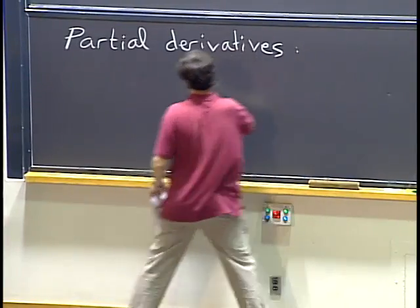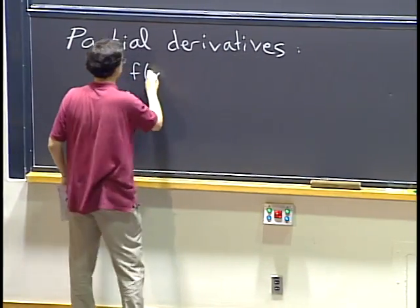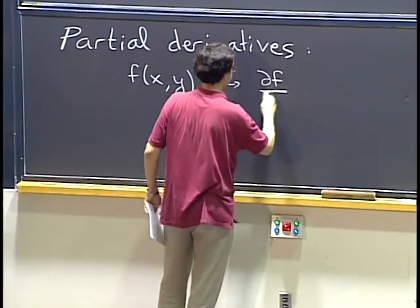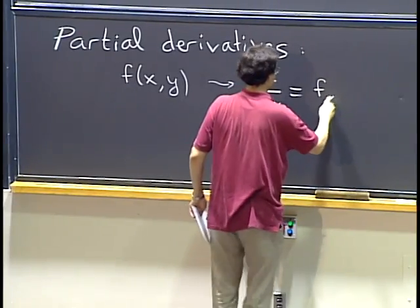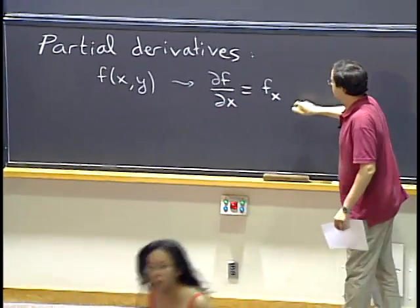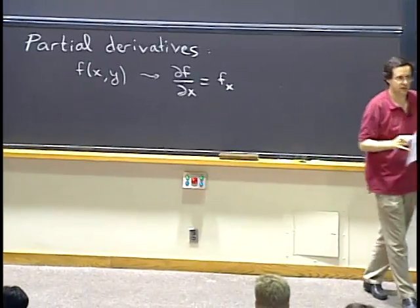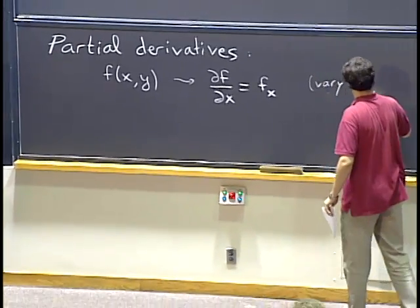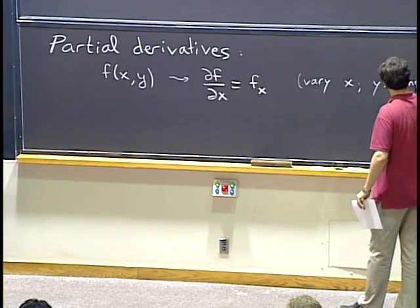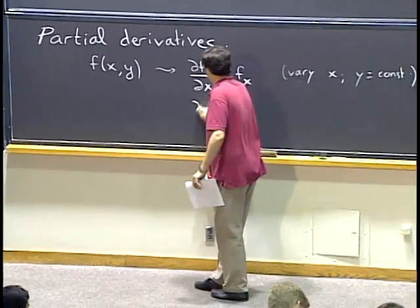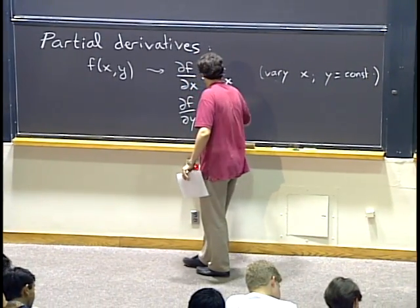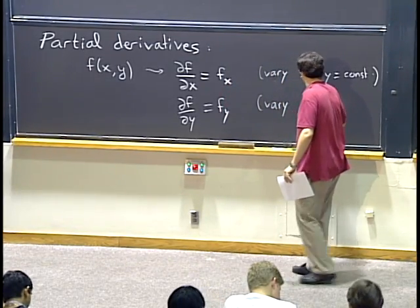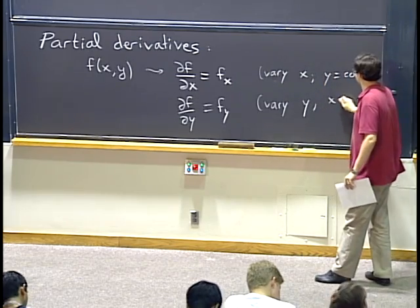Remember last time we said that when we have a function of two variables, x and y, then we have actually two different derivatives. Partial f, partial x, also called f sub x, is the derivative with respect to x, keeping y constant. And we have partial f, partial y, also called f sub y, where we vary y and we treat x as a constant.